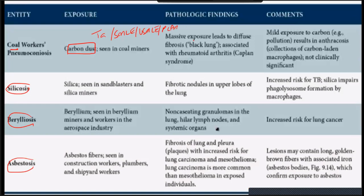Coal workers' pneumoconiosis: massive exposure to carbon dust is called black lung. If it is associated with rheumatoid arthritis, we call it Caplan syndrome — MCQ. Mild exposure to carbon pollution, such as in cities, can also cause coal workers' pneumoconiosis, which is a fibrotic restrictive lung disease.